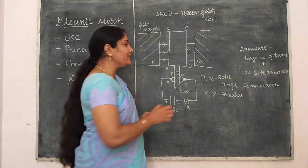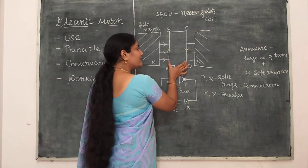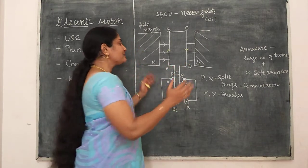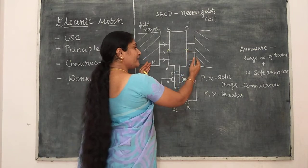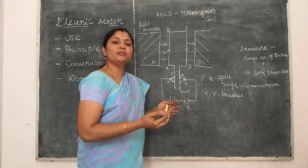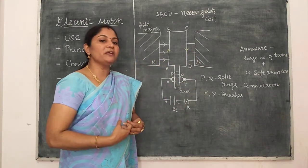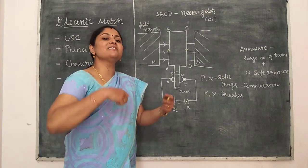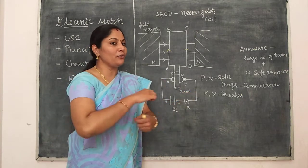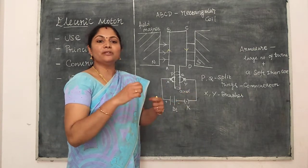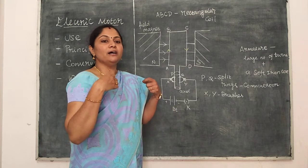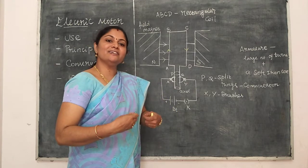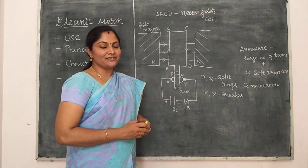The rectangular coil is a current-carrying conductor kept inside the magnetic field, due to which it experiences a force. That force produces a rotational effect in the coil, which converts electrical energy into mechanical energy.